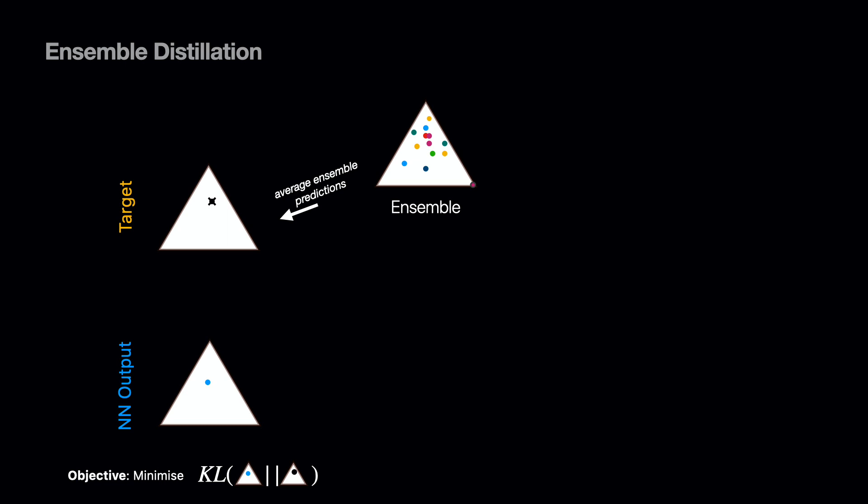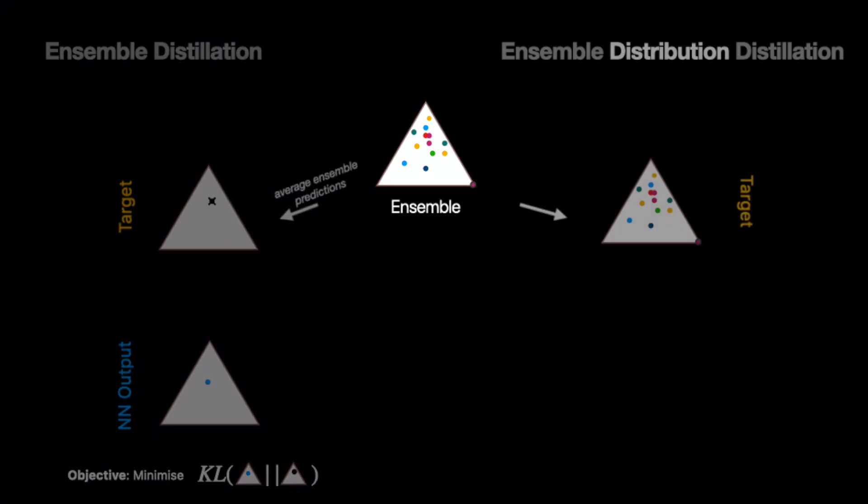Ensembles give better performance than a single neural network, so let's train the neural network on the mean of the ensemble predictions to get better performance. If a performance boost is all you're after, this works well. However, by averaging all the ensemble predictions, information about the diversity of the samples from the ensemble is lost. Consequently, the information about the ensemble's knowledge and data uncertainty is also lost, and we are no longer able to compute measures of those. By distilling into a regular neural network, we lose the uncertainty estimation benefits that the ensemble provided in the first place.